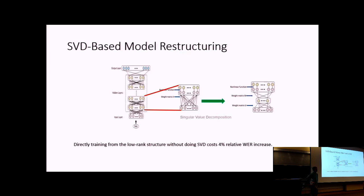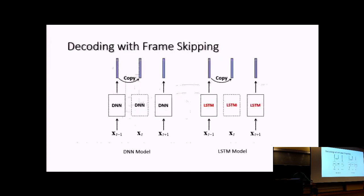A question was raised: after SVD, does fine-tuning help? It depends on how aggressively we compress. If we only slightly compress — for example, reducing the model to half its size — we don't need to fine-tune. But for the example of 80% model size reduction, we do need to retrain the model. This SVD structure is a success at Microsoft: for every speech recognition product, whether Cortana, Xbox, or Skype, and whether using feed-forward deep networks or LSTM, every product uses the SVD structure.